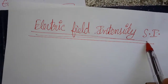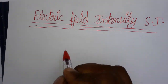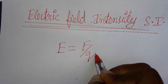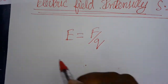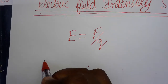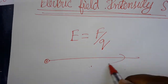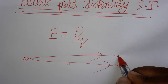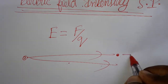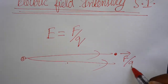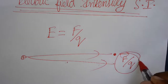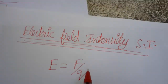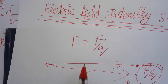We are going to learn electric field intensity SI unit. Electric field is equal to force per unit charge. If I have a positive charge, the electric field will be pointing outwards. You can consider a test charge - how much force is expressed per unit charge is what we take as the electric field. Because of the electric field only, this happens.